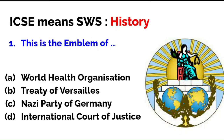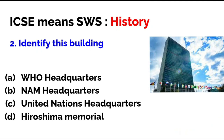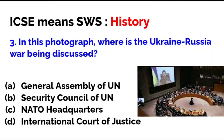Identify this particular building. Is it the WHO headquarters, the NAM headquarters, the United Nations headquarters, or the Hiroshima memorial where the atom bomb was dropped on the 6th of August 1945? The correct answer is C — United Nations headquarters in New York. This photograph is in most textbooks, so please look at it carefully.